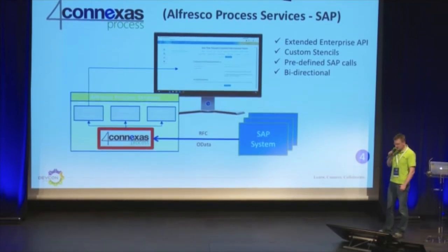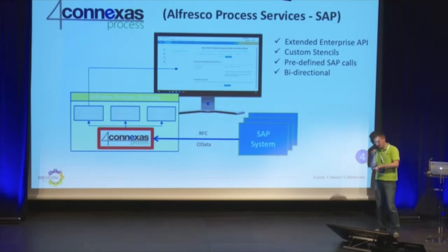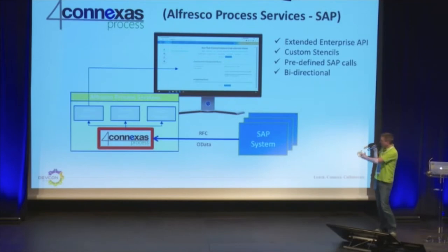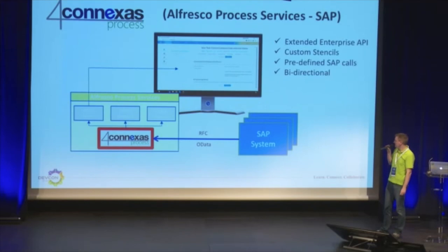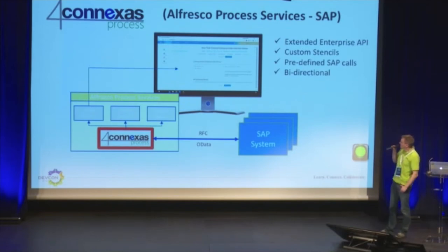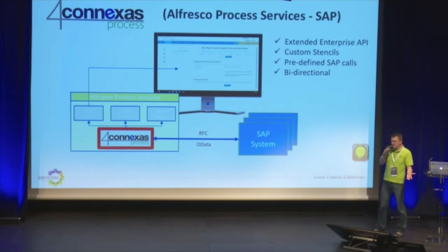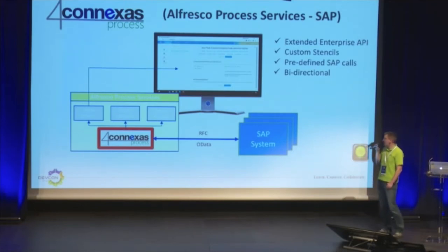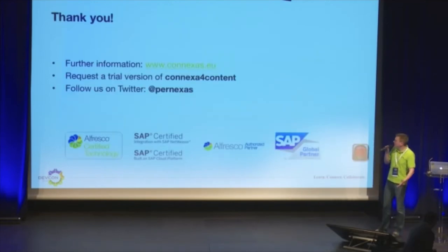The last product in line is Connexus for Process. This is the other way around — here we integrate SAP data into your existing Alfresco Activiti workflows. The setup runs on the Alfresco Process Services side. Data transfer between Connexus for Process and SAP systems can be done either by RFC or OData. We are connected to the workflow, and you can have your SAP data ready in any dropdown box or even in a service task, so you can drive your workflows with SAP data. We've extended the Enterprise API, have a couple of custom form stencils available, and even some predefined SAP calls. Check our website for more information, and for our popular SAP integration we also offer a trial version.